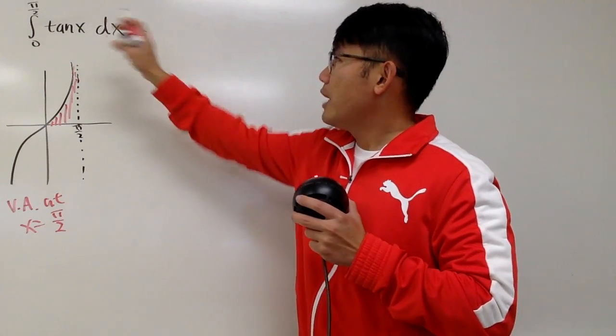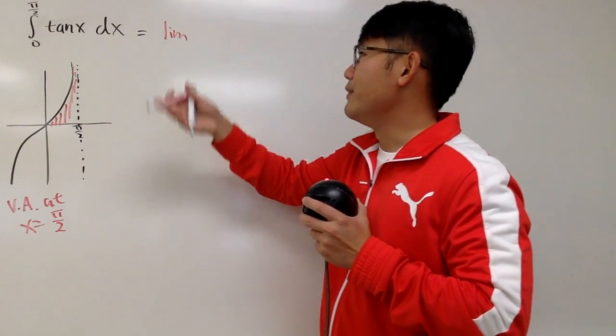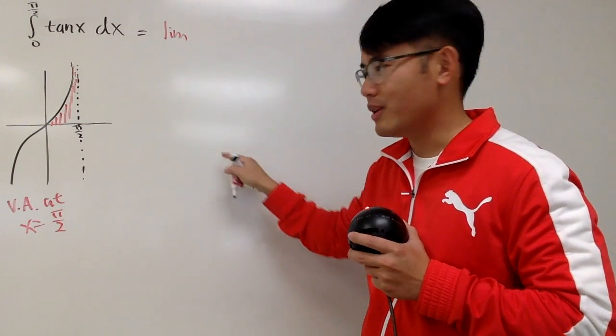So, pi over 2 is a trouble place. We'll change that to limit. And I will write down the limit. If you put on pi over 2, you just have to make sure pi over 2 minus.